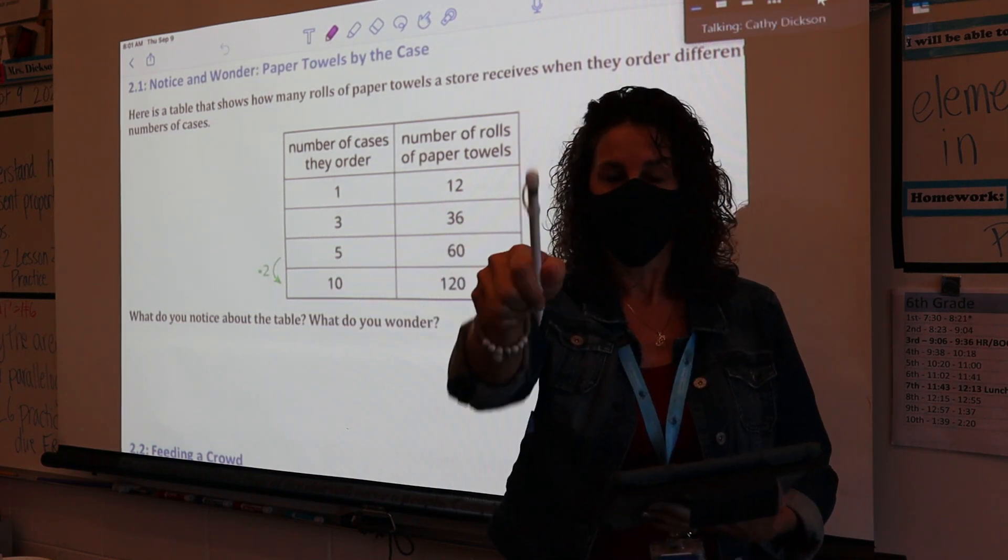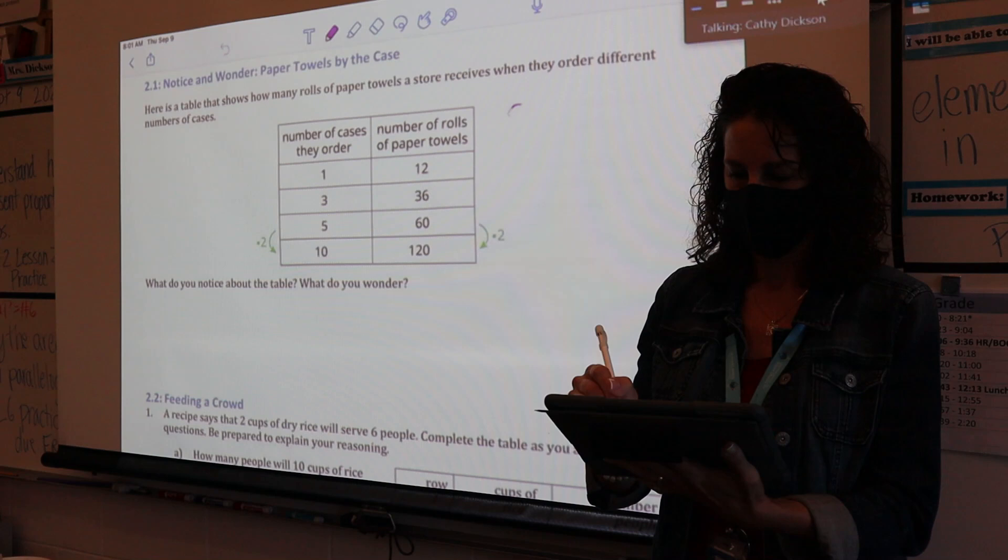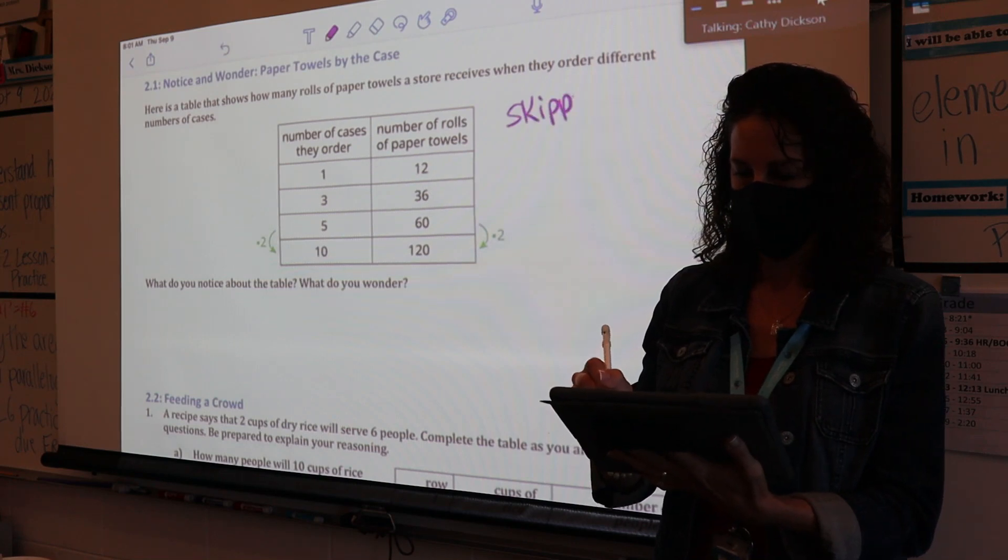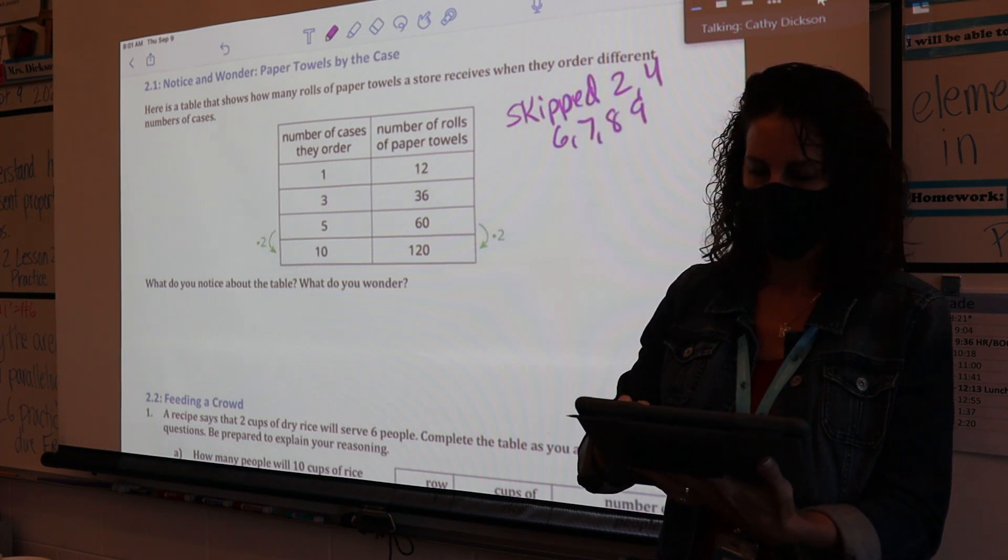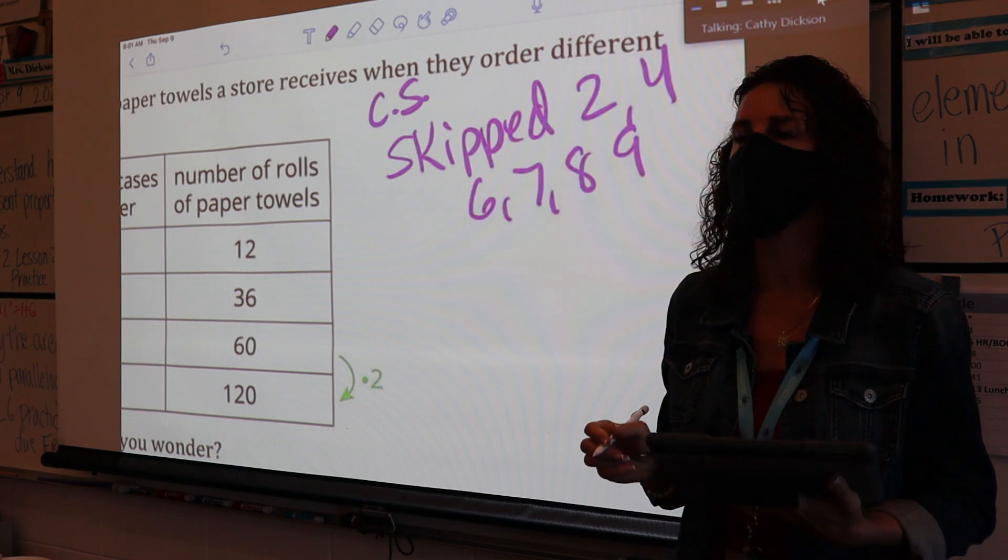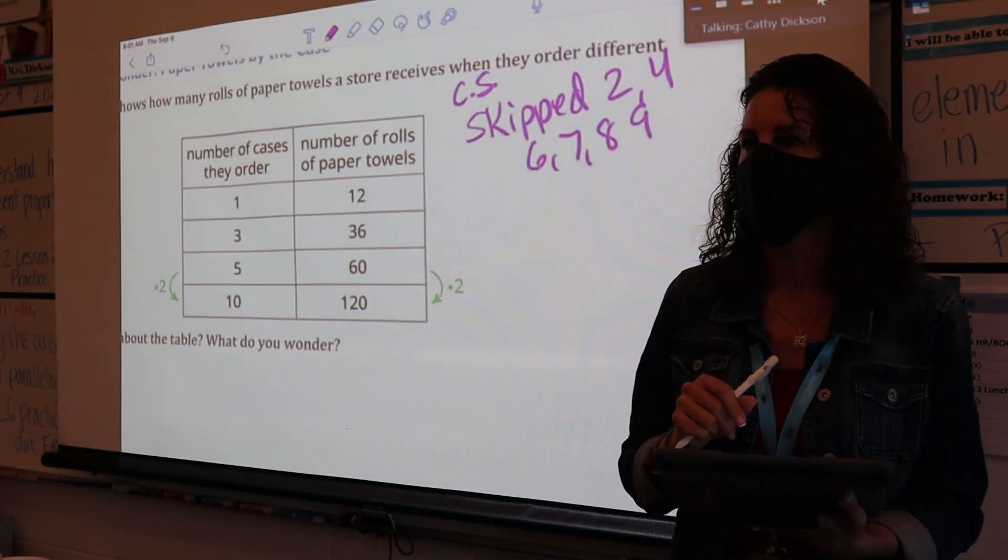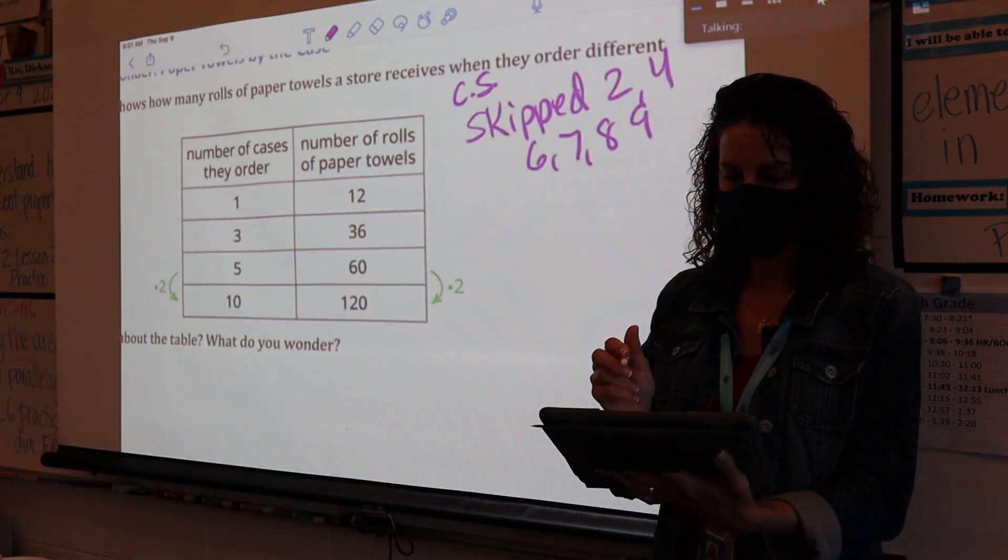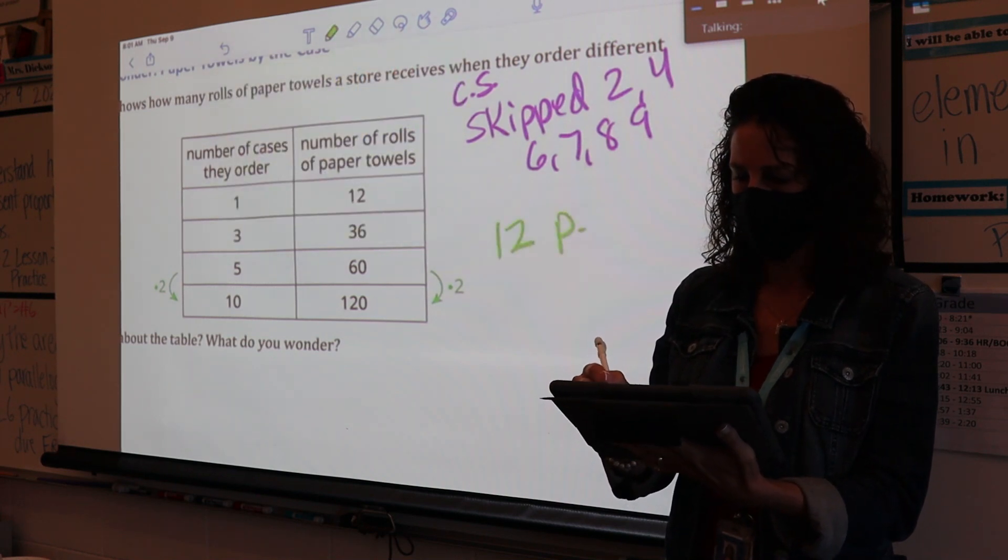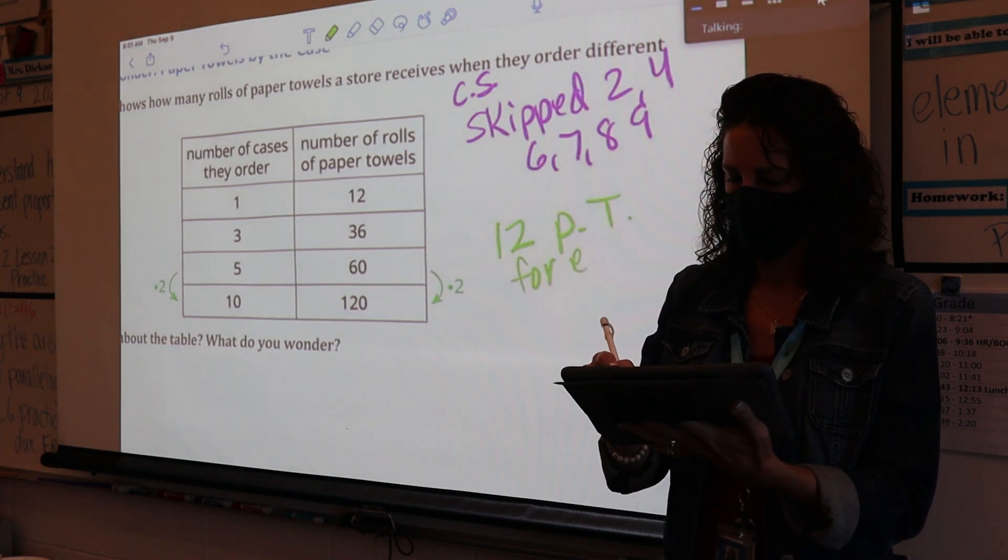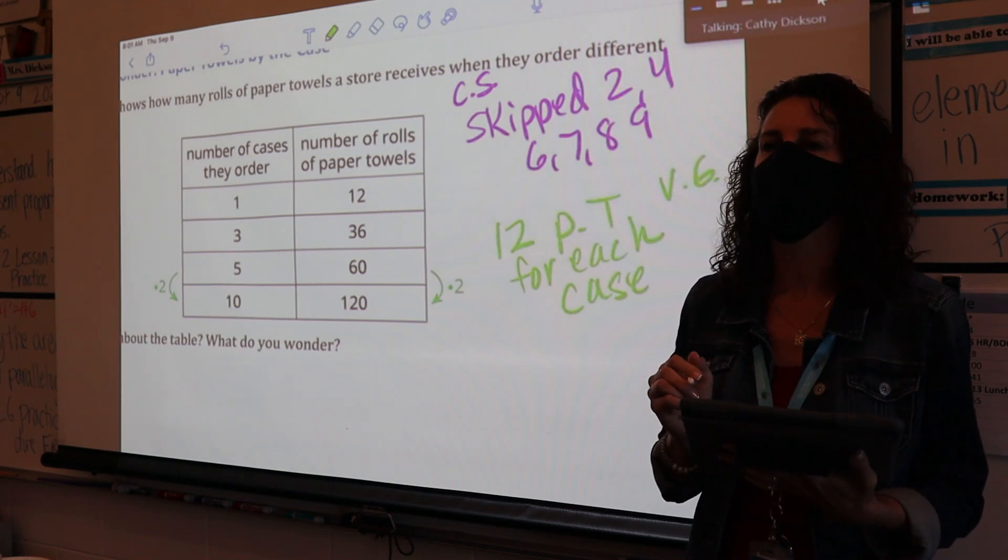I noticed that they skipped 2, 4, 6, 7, 8, 9, and you're talking about the number of cases. Okay, I'm just going to put your initials there. Let's do a one, two, three clap. One, two, three. Good job. What do you notice or what do you wonder? 12 paper towels. I'm going to put PT. 12 paper towels for each case. Let's do a one, two, three clap for that notice. One, two, three.